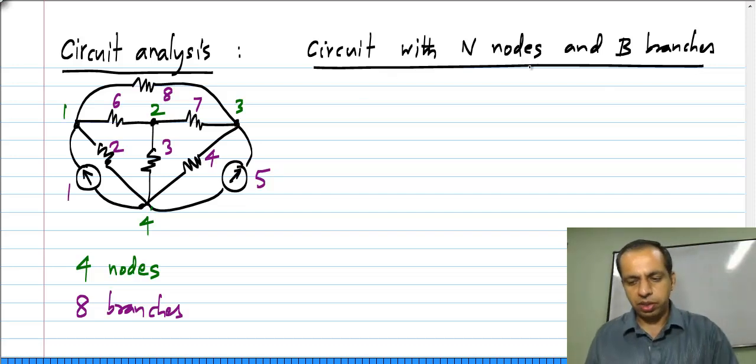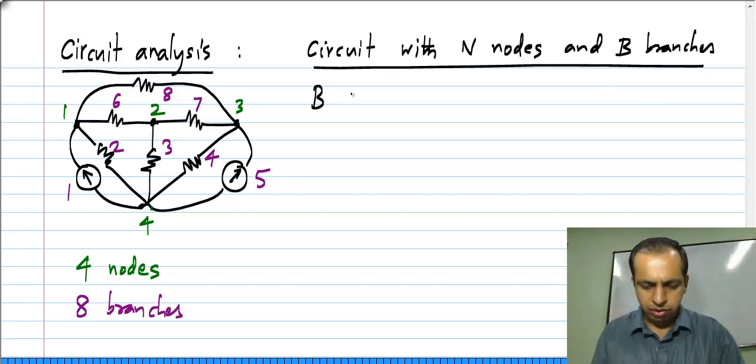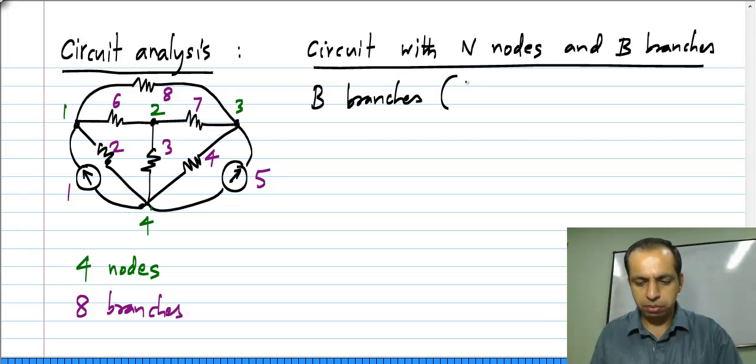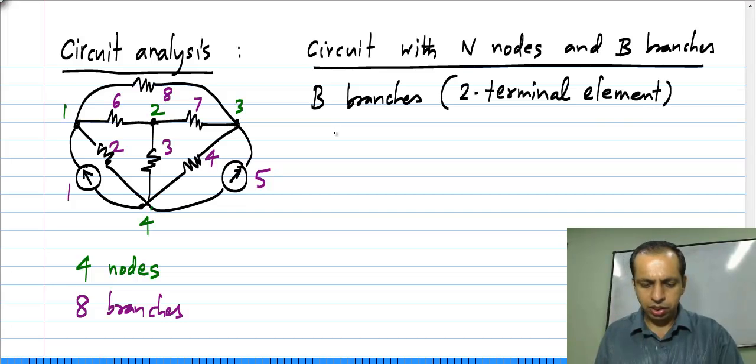So if we have two terminal elements, so B branches and each branch can be considered a two terminal element, then we will have two terminal elements.